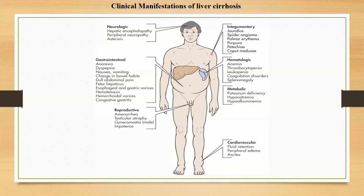Reproductive symptoms in females include amenorrhea, while in males there is testicular atrophy, gynecomastia, and impotence. Integumentary symptoms include jaundice, spider angiomata, palmar erythema, purpura, petechiae, and caput medusae.